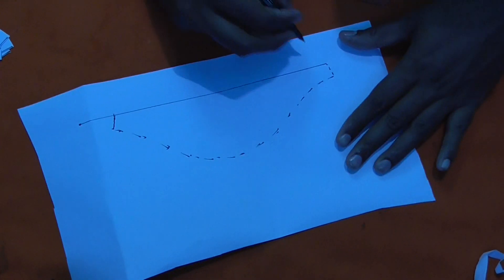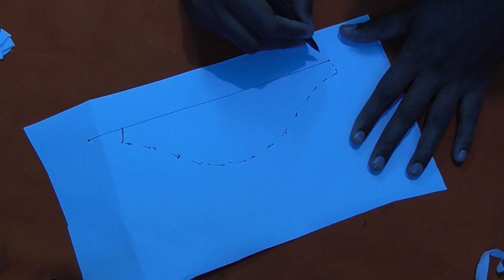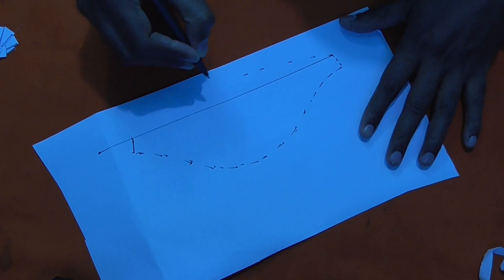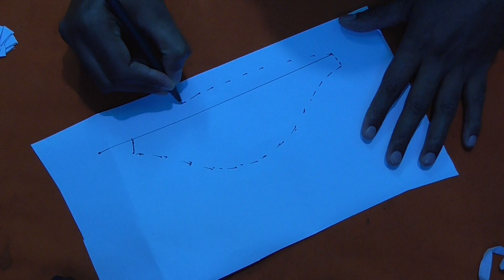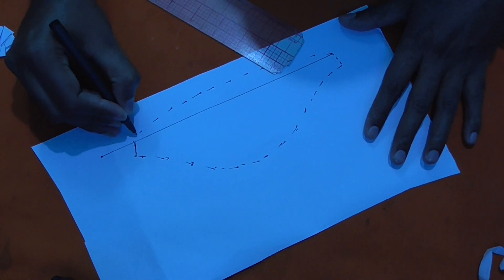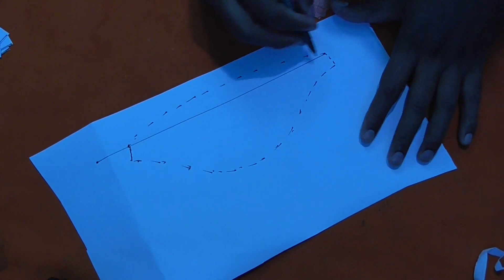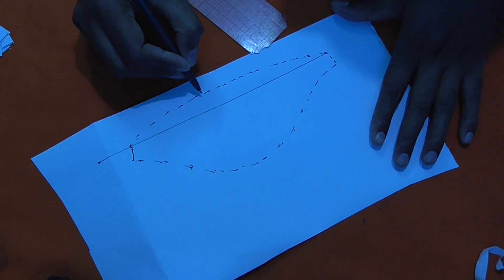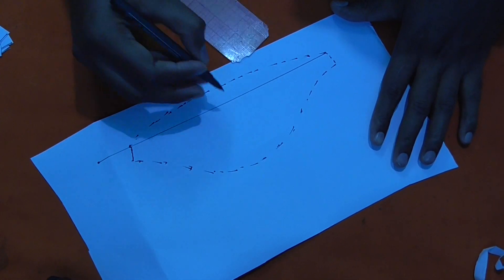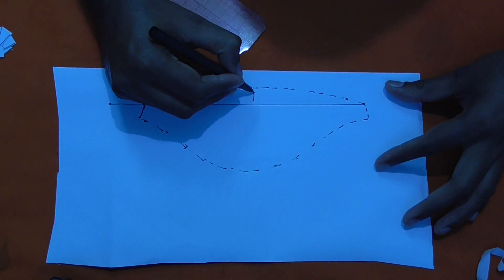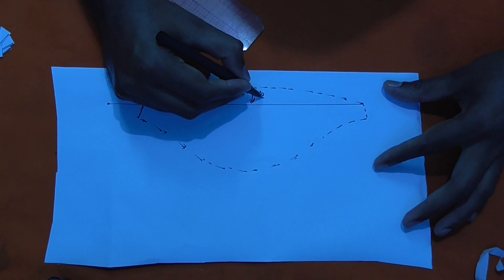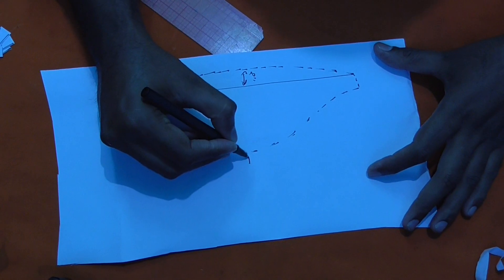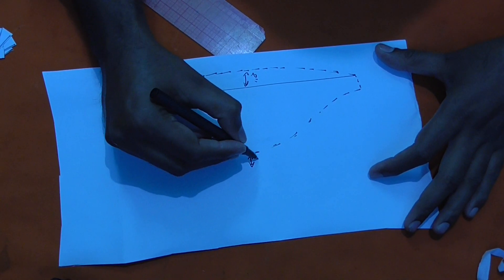You can add a little bit of fabric like this, around 2 inches. This gap is around 2 inches, and you can add here also 2 inches.